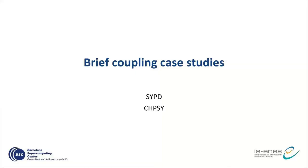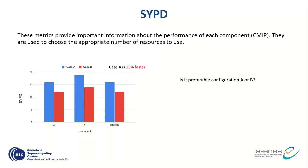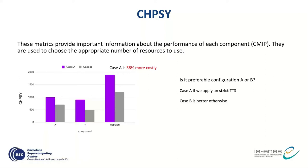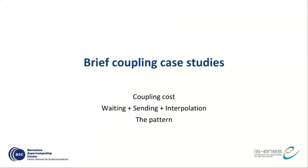I will now give some basic examples of where these metrics are useful. For simulation days per day, we can know which configuration is faster and has better time to solution. With core hours, we can determine which case is more efficient from a computational point of view — and this could be important for the final decision of which setup to choose.